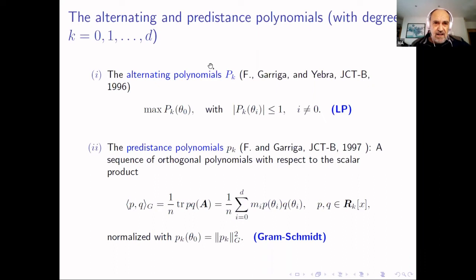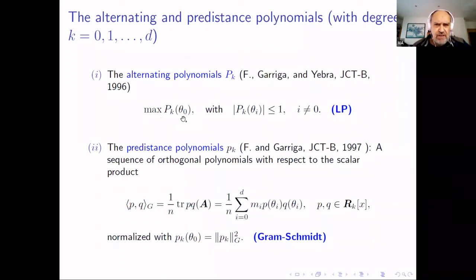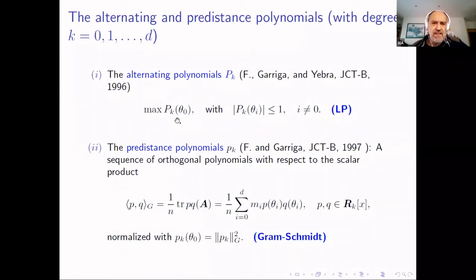When you take K equal one, this is just the independence number, and alpha_k of G is the same as the independence number of the K-th power of G. Let's go to present four families of polynomials. I would like to try to convince you that perhaps some of these polynomials could be used generally in spectral graph theory. The first are the alternating polynomials.